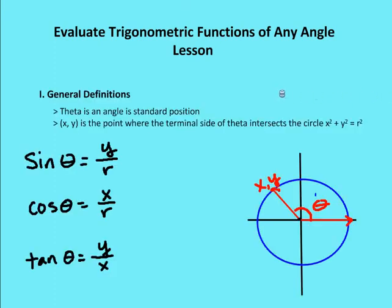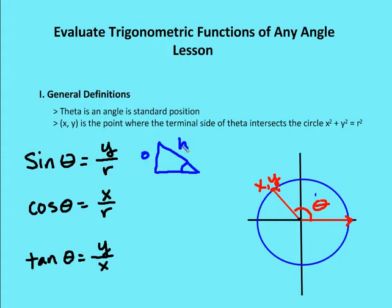We've talked about the relationship of the sides in a right triangle and how they define a particular trig function. For example, sine is going to be the opposite side of a right triangle over the hypotenuse. So if I have a right triangle and my angle in question is this angle, then the opposite side is here and the hypotenuse is here. So the relationship of sine based on the angle in question is going to be the opposite side over the hypotenuse.